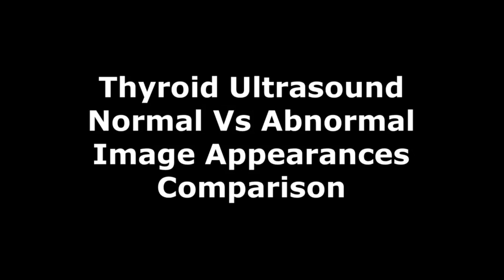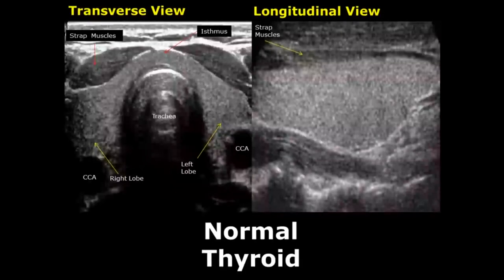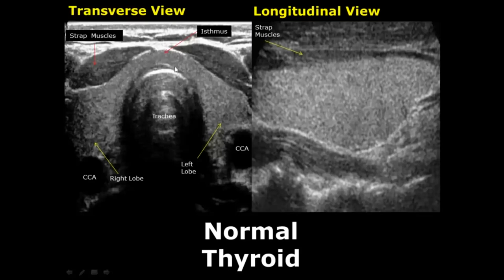Hello everyone, this is Dr. Sam and today we will study ultrasound appearances of thyroid. The thyroid gland is located in the neck region. It is divided into two lobes, the right lobe and the left lobe, and these two lobes are connected together through the isthmus. The thyroid has a hyperechoic appearance and over here is the trachea.